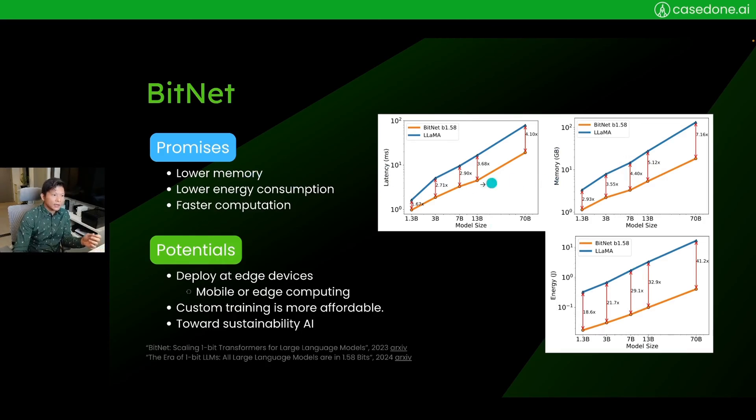You can see that this BitNet has high promises, and the potentials to me are huge. When the model can run with lower memory and lower energy, it's suitable for running on edge devices like your mobile phone or IoT computers at the edge, far away from the data center. If mobile phones can run the BitNet large language model with the capability of, let's say, GPT-4 as we have now, the kind of applications it will unlock is huge.